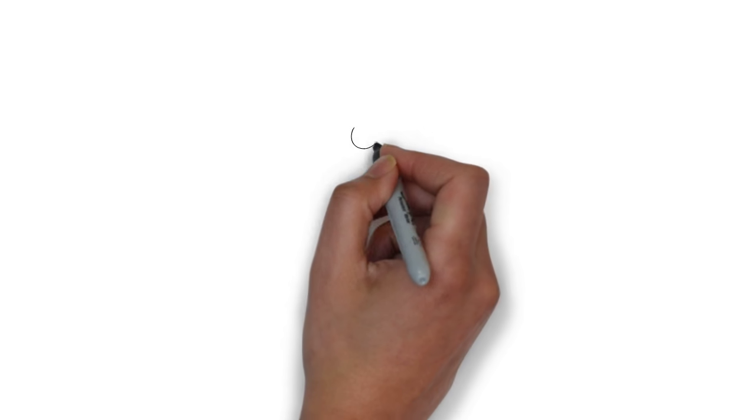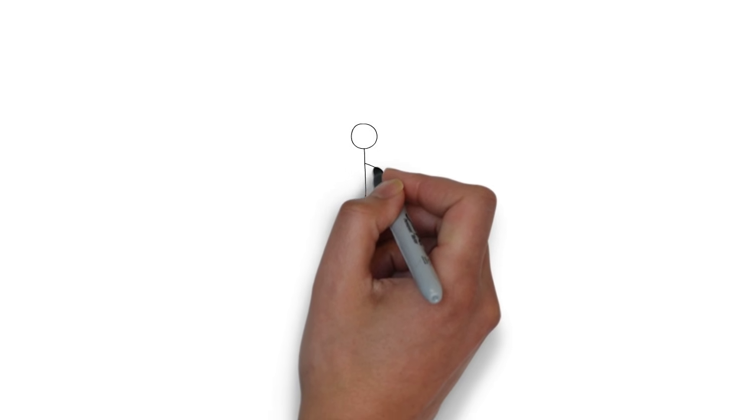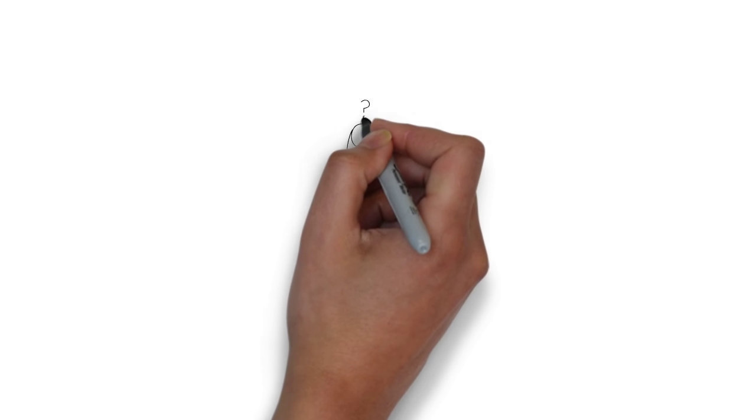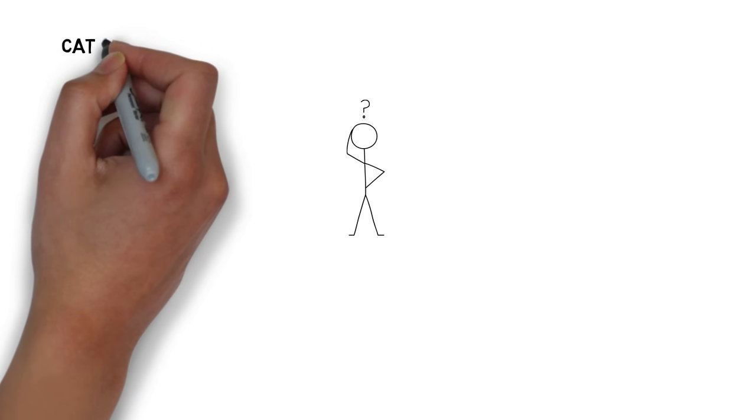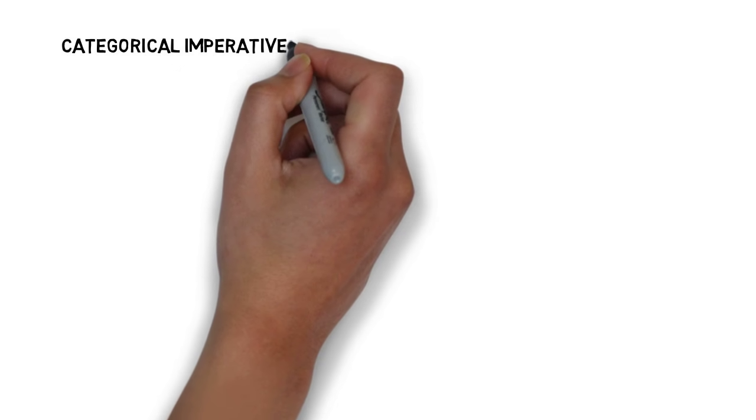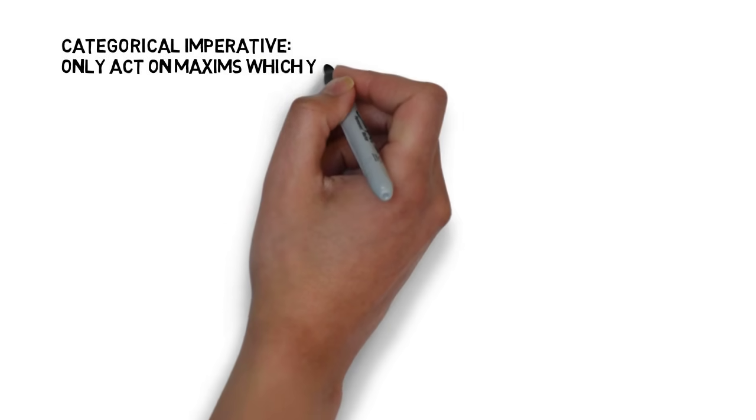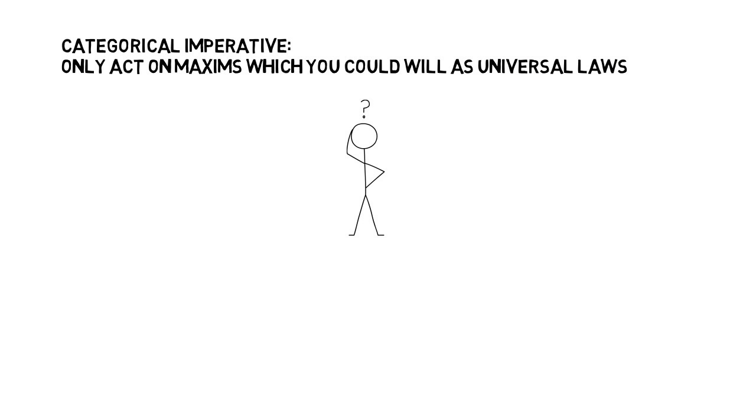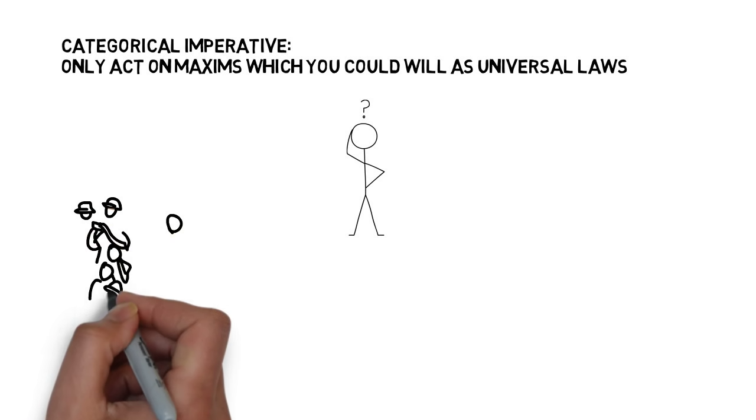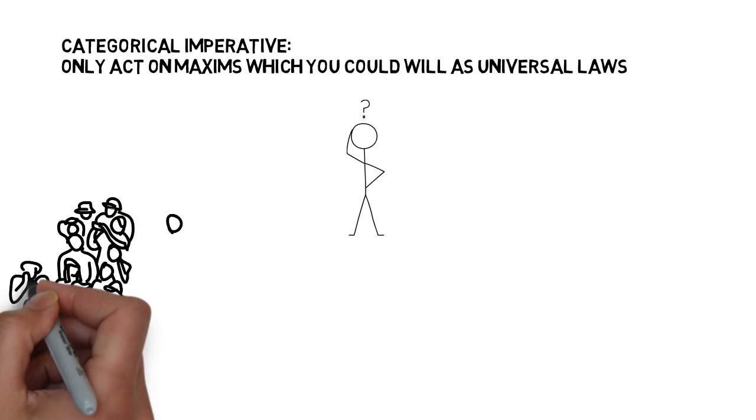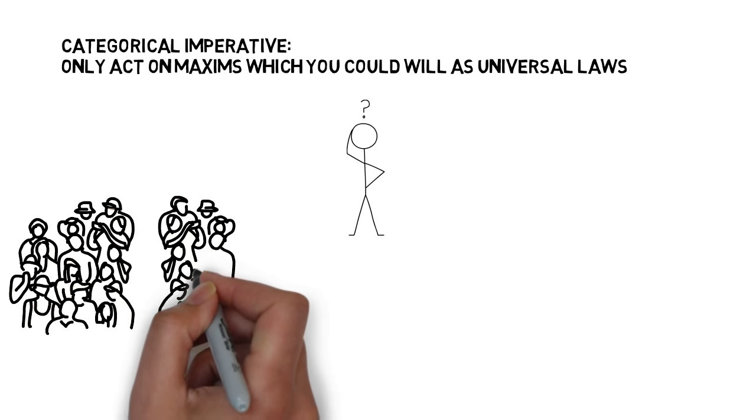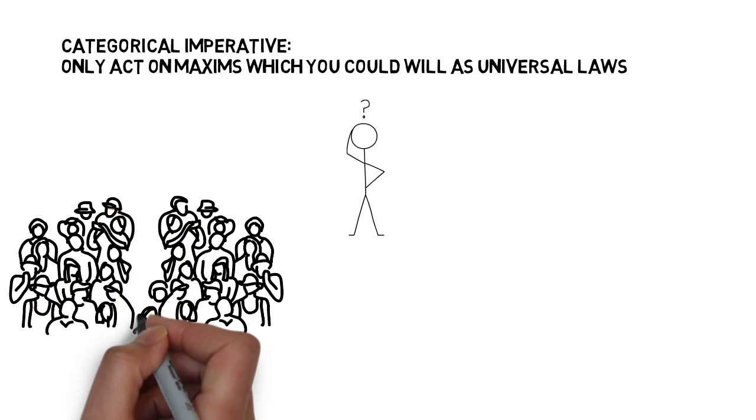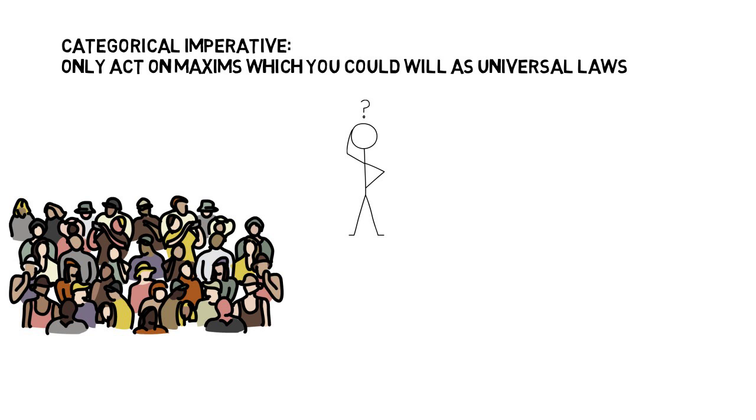Kant came up with two different tests for how we can tell whether a given action is in accord with duty or fits with the moral law. His test called the categorical imperative states: I should never act except in such a way that I can also will that my maxim should become a universal law. Kant says that we need to ask ourselves whether we could will to live in a world where every other person acted according to the principle we are about to act on.